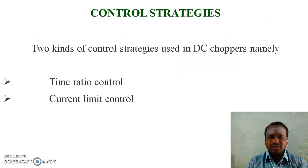Control strategies of chopper: There are two kinds of control strategies used in DC choppers, namely time ratio control and current limit control.